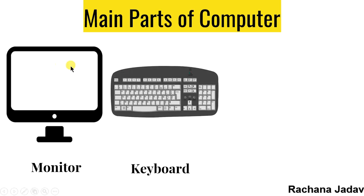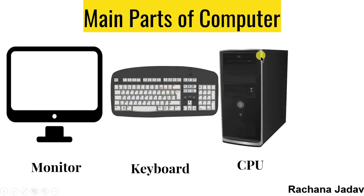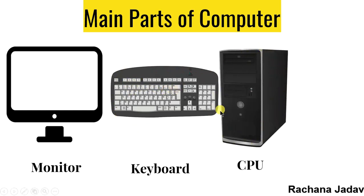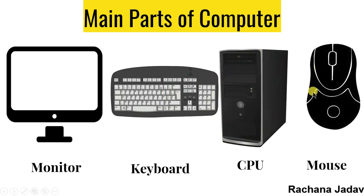Next is keyboard. Keyboard — which type of device is it? Mujhe comment box me likke batana — input or output device. It is used to enter text, numbers, alphabets. Then CPU is the brain of computer. And mouse — everyone knows that mouse is an input device.